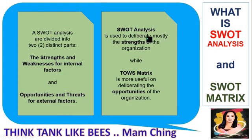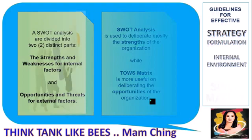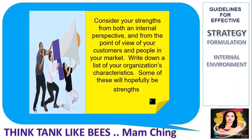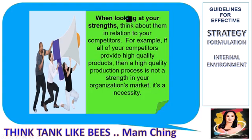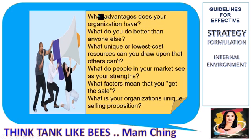SWOT analysis is used to deliberate mostly the strengths of the organization, while using the TOWS matrix is more useful for deliberating the opportunities of the organization. You need to consider your strengths from both an internal perspective and from the point of view of your customers and people in your market. Write down a list of your organization's characteristics, and some of these will hopefully be strengths. When looking at your strengths, think about them in relation to your competitors — for example, if all your competitors provide high quality products, then a high quality production process is not a strength in your market; it's a necessity.